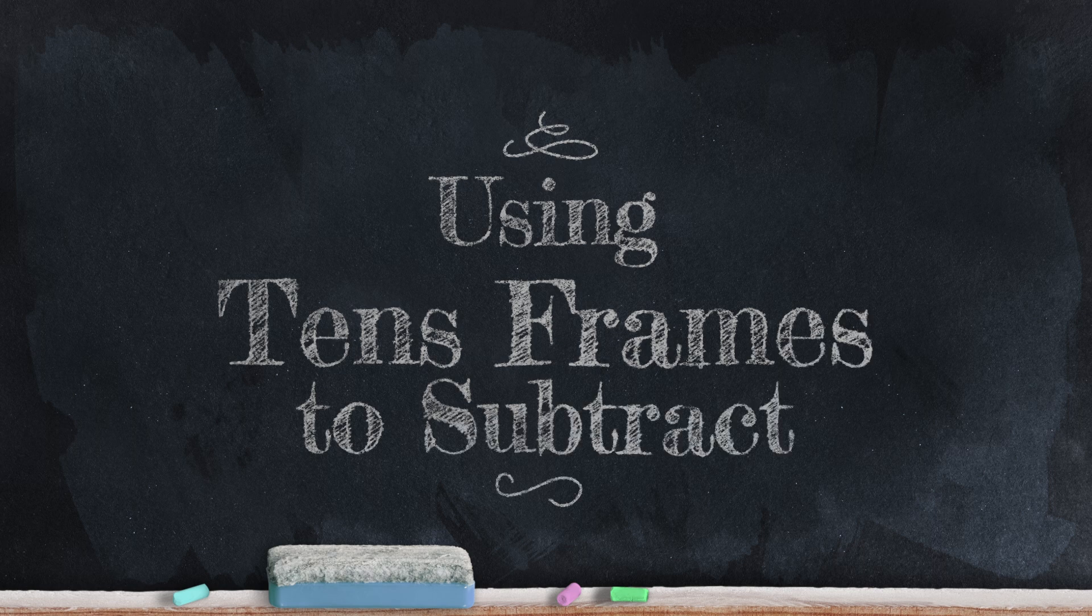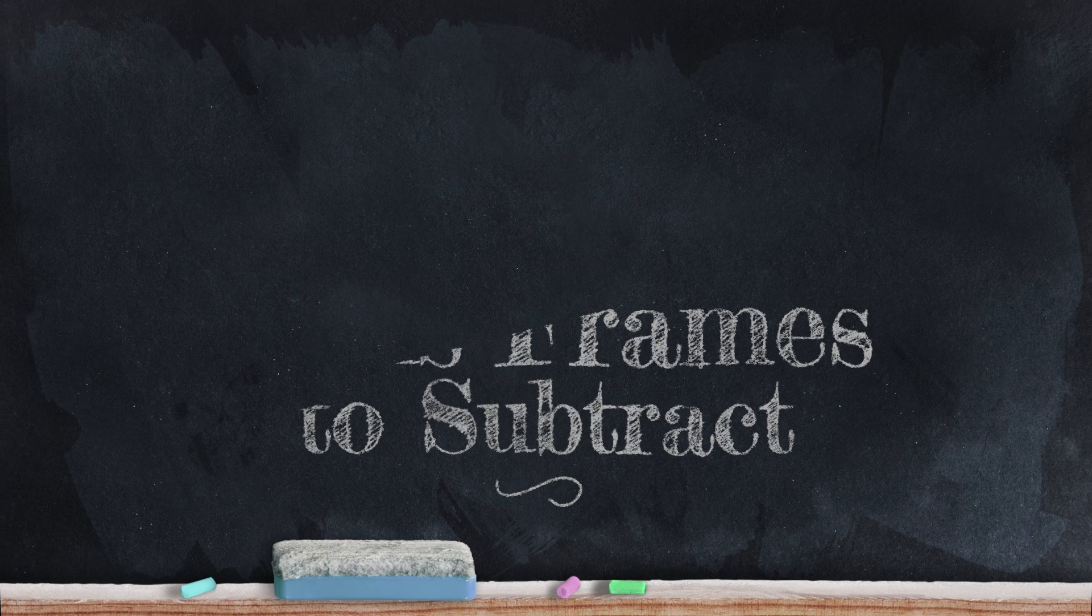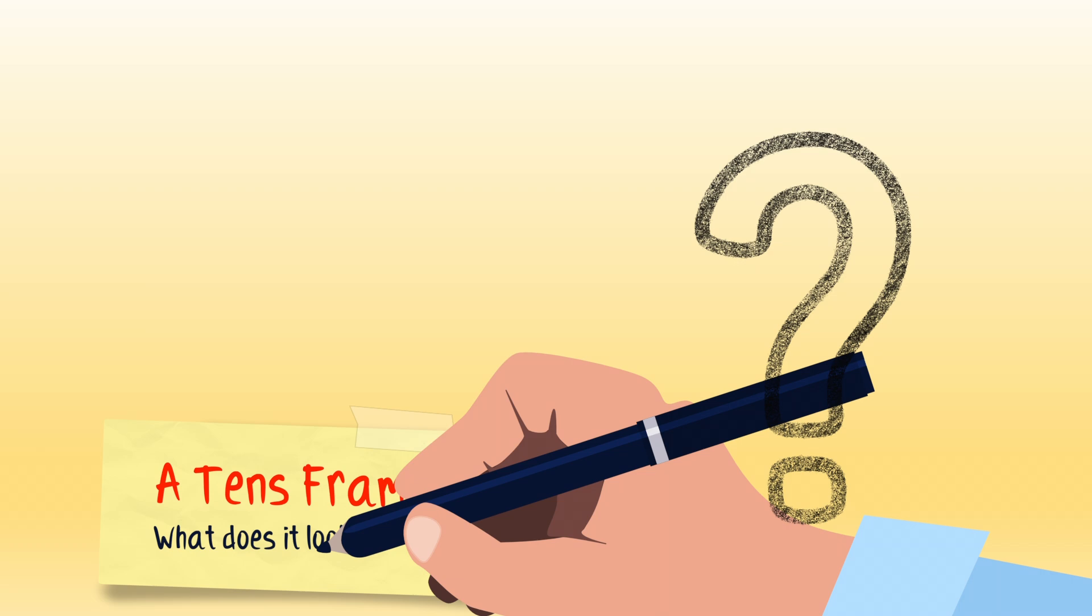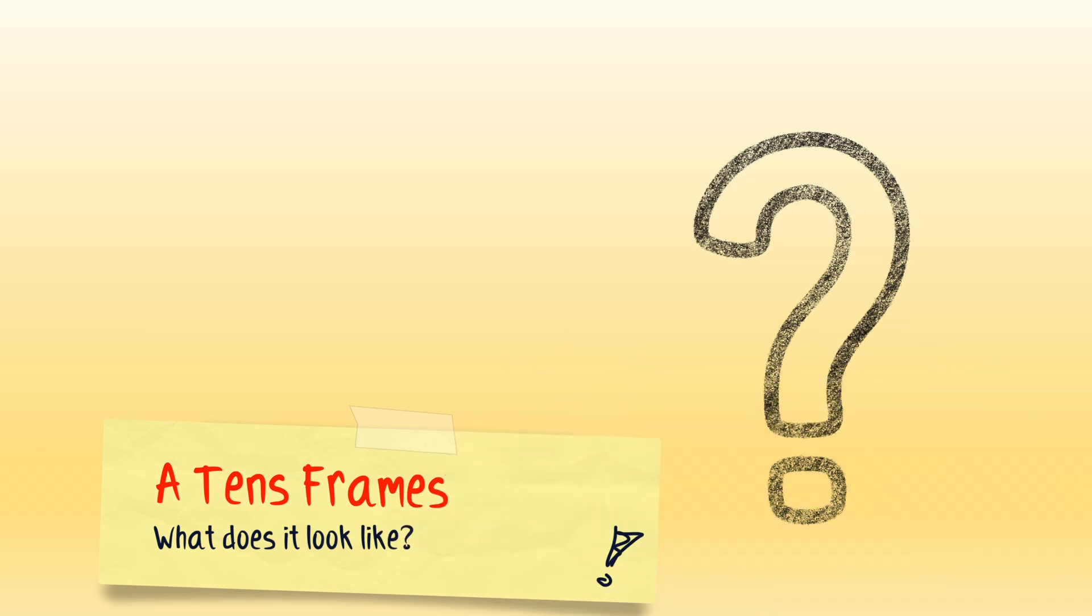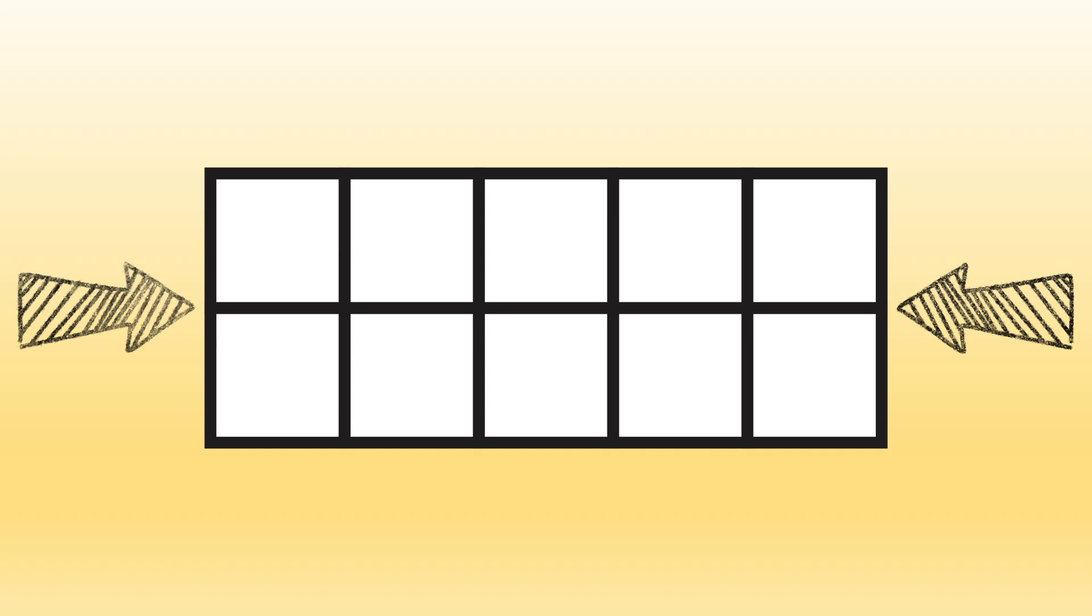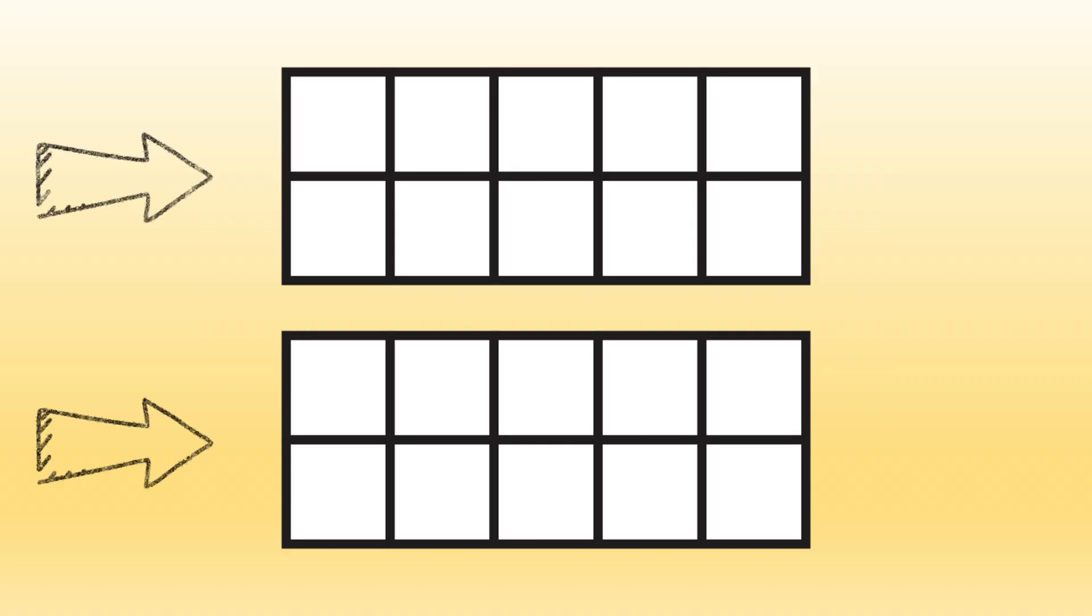Remember, a tens frame is a great tool for adding and subtracting numbers up to 20. What does a tens frame look like? A tens frame is a rectangle that's divided into 10 equal parts. It looks like this. When we work with tens frames, we usually work with two empty frames at a time. Here, we have two empty frames.